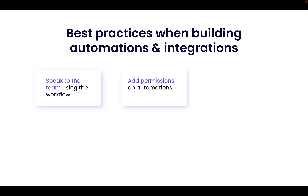Add permissions on automations when there is a large number of contributors. Restrict who is able to add automations to your account's boards to avoid users adding additional automations to existing boards, which could slow down the performance. We will dive deeper into permissions and governance in the next chapter.